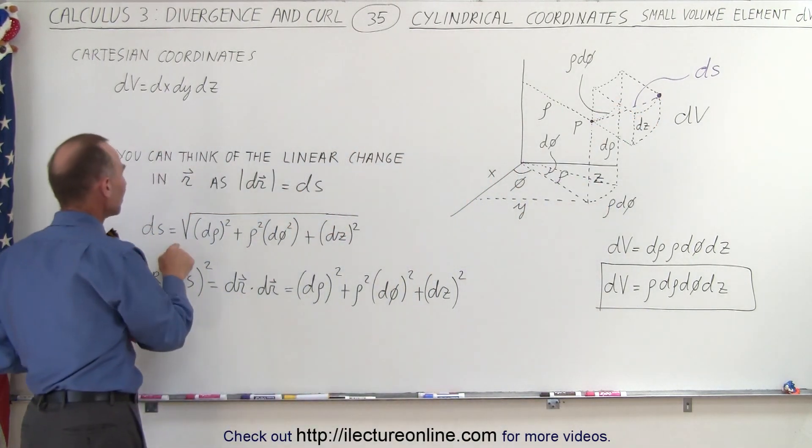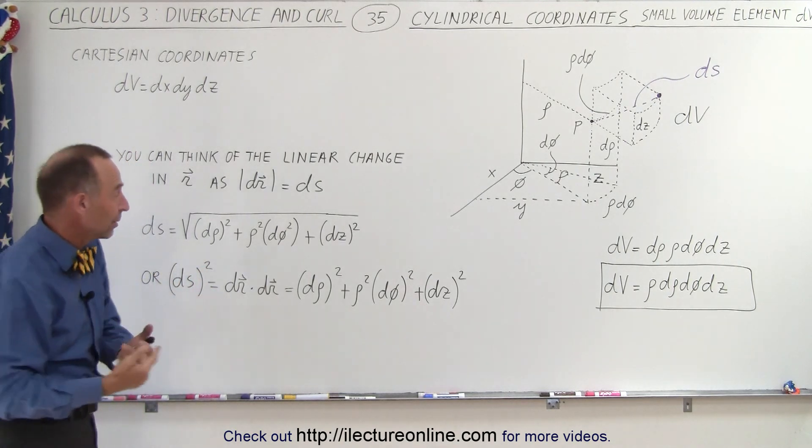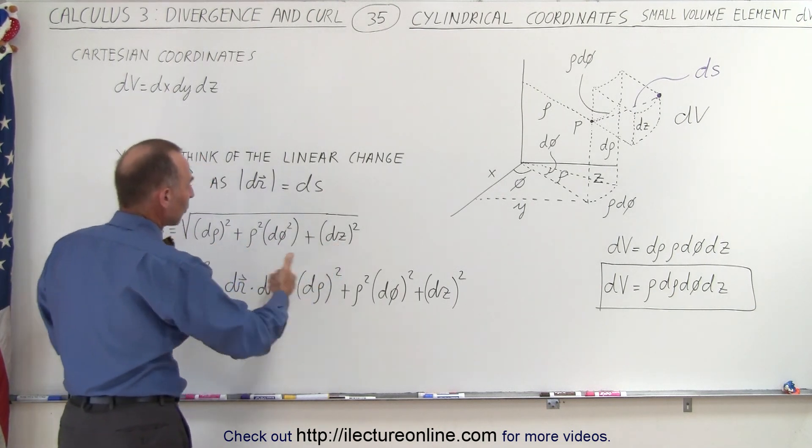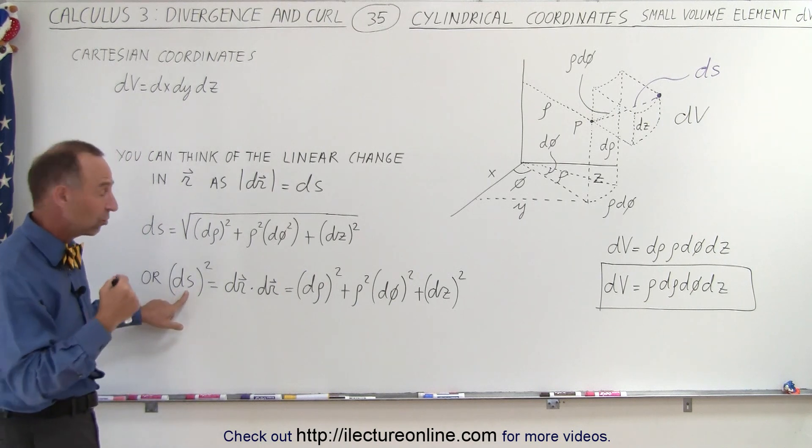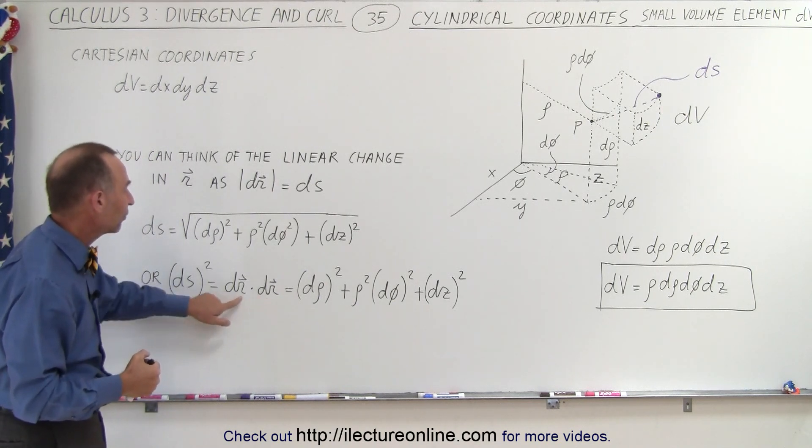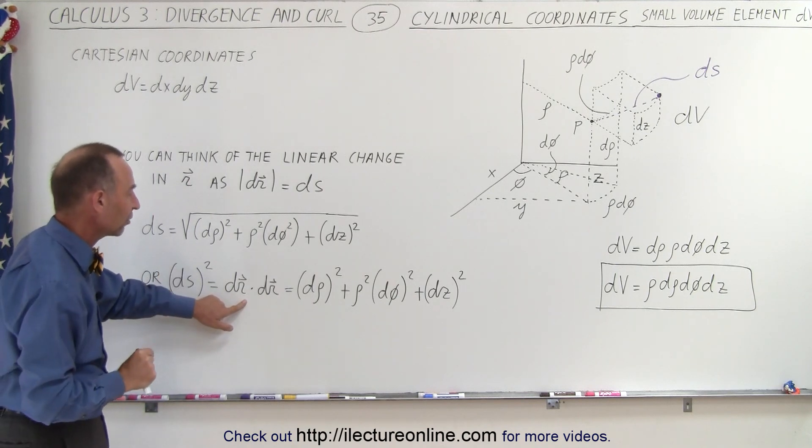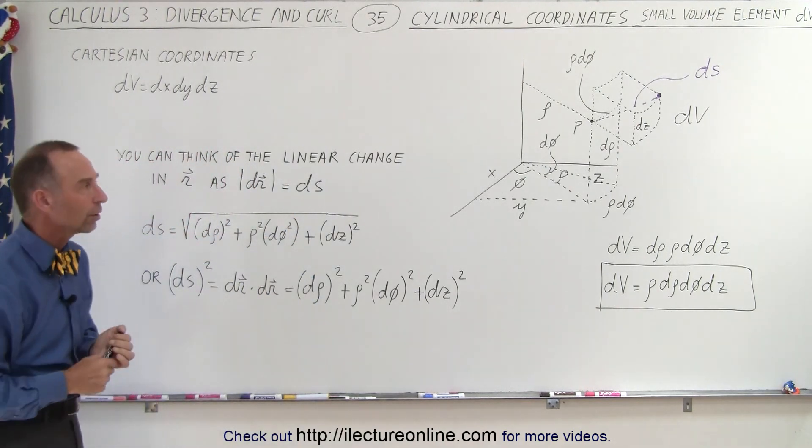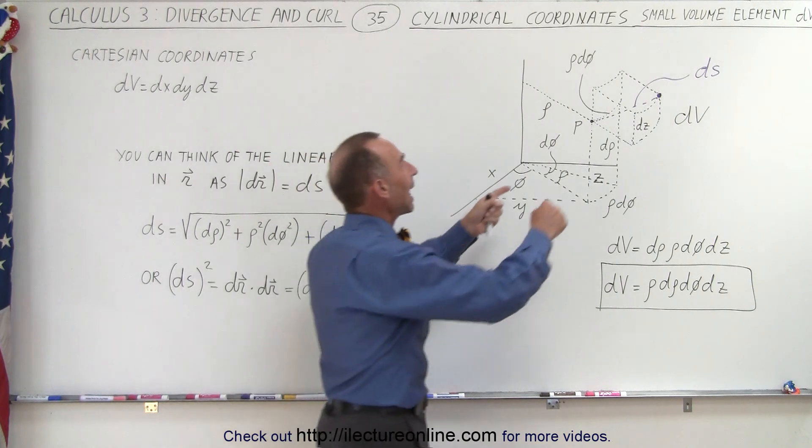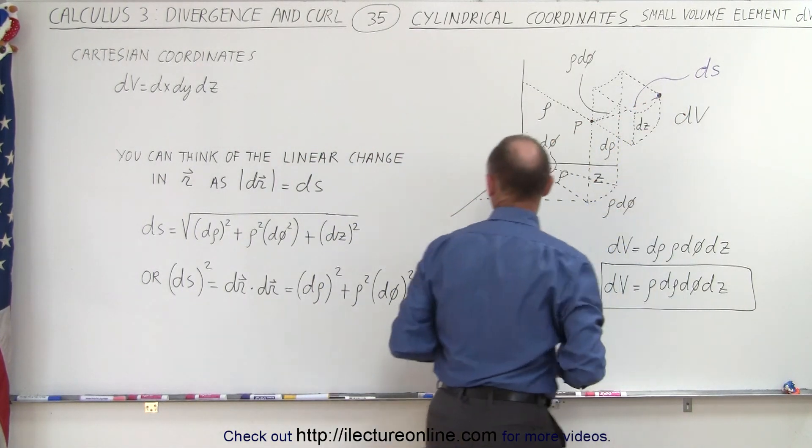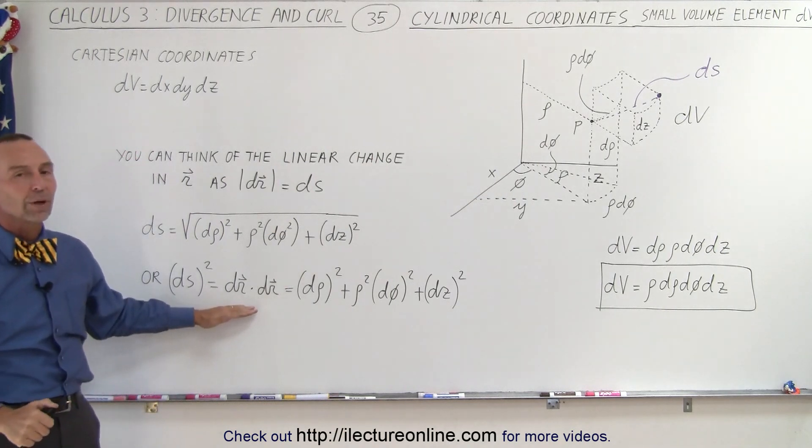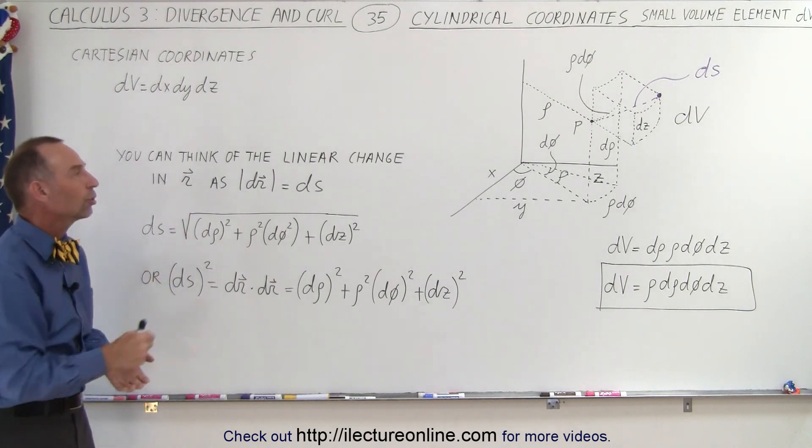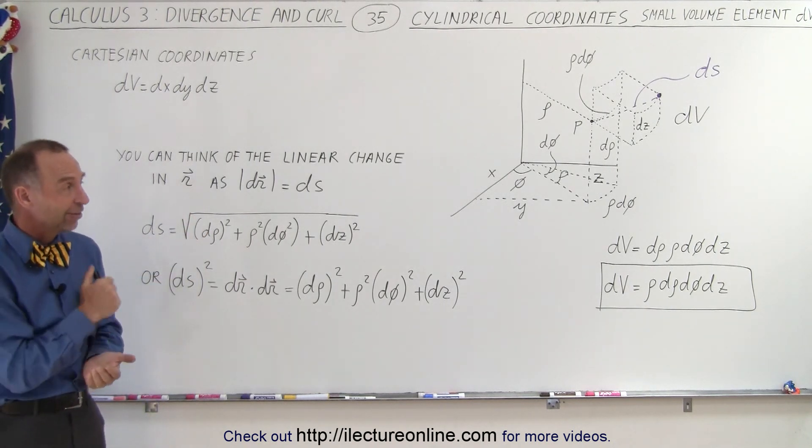In other words, ds can be defined as Pythagorean theorem in three dimensions, the square root of this side squared plus this side squared plus this side squared. Or, if you want to square both sides, you can say that ds squared is equal to the dot product of the dr component, the small change in the position vector, which can then be defined as this, which is what's inside the radical, but not the radical sign since we squared it. So ds here represents the diagonal distance across the volume element, which can be found according to this equation right here. And that's what we mean by the volume element, and by the distance from one corner to the other corner in that volume element ds, in cylindrical coordinates.